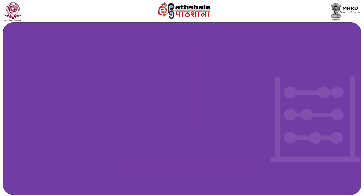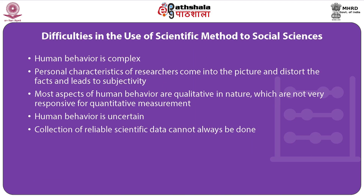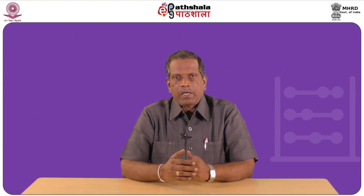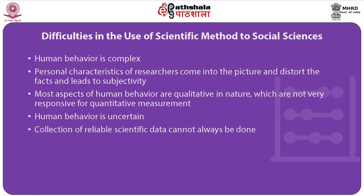Having understood the intricacies of scientific method, we will see the difficulties in the use of scientific method in social sciences. The first difficulty is that human behavior and social phenomena are complex and varied across and within societies and cultures, making it very difficult to study them with a scientific approach. Secondly, social science researchers mostly study and analyze the social life and human behavior of other human beings, and thereby personal characteristics of researchers come into the picture and distort the facts, leading to subjectivity.